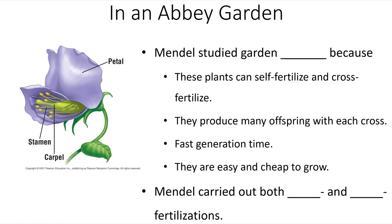Gregor Mendel studied garden peas for a variety of different reasons. First, these plants were easy to self-fertilize or cross-fertilize, meaning he could control the reproduction among or between the plants easily. They also produced many offspring with each cross and had a fast generation time — he could get two or three generations in a single growing season. And also, they were cheap and easy to grow.